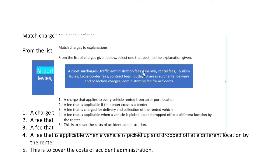On my previous video we spoke about car rental and we spoke about additional costs related to renting a car. Here we have an activity that we're going to do together — we are going to match the charges to the explanations. Here we have the explanations and here we have the charges. I am going to use a highlighter to highlight our answers. The first one says: a charge that applies to every vehicle rented from an airport location.